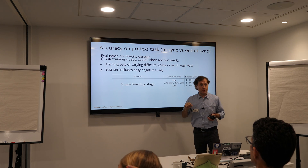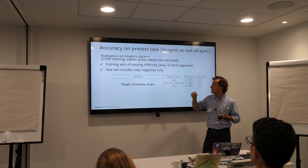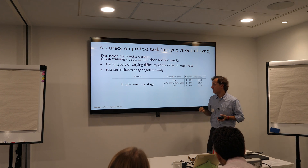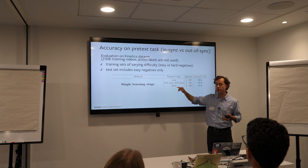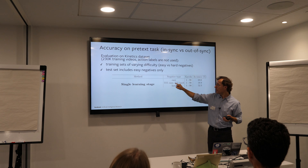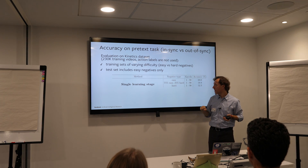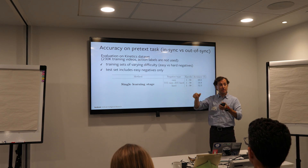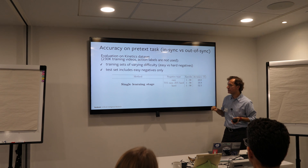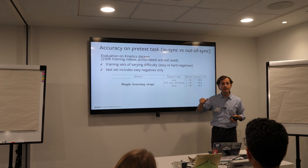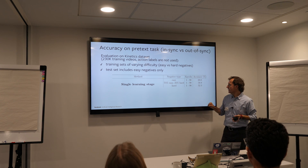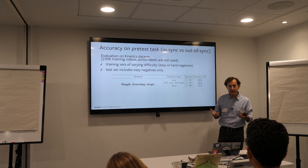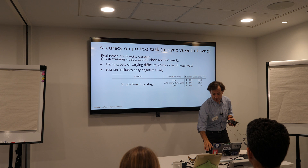We first evaluated this approach on the pretext task itself — temporal synchronization. We trained on Kinetics and generated three different training sets to determine the role of negatives: one with all easy negatives, one with a mix of easy and hard negatives, and one with only hard negatives. To compare on equal ground, we fixed the test set to include only easy negatives. Not surprisingly, the model trained on easy negatives performs best, since the test set has the same statistics.